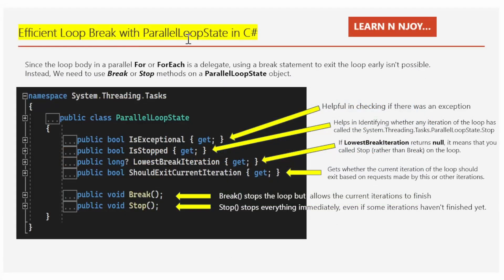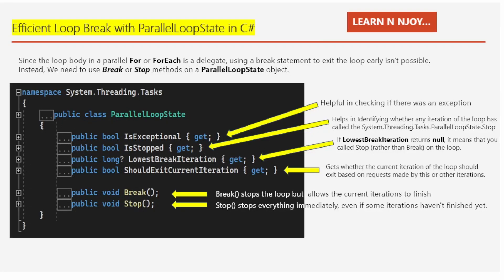Efficient loop break with parallel loop state in C#. When you are doing tasks simultaneously using loops in programming, it's not easy to stop the loop whenever you want using the regular break statement. Instead, you use something called a parallel loop state object to stop the loop. Imagine you are counting apples with your friends — each person counts a few. If one friend finds a rotten apple and wants to stop counting, they need to tell everyone to stop. That's exactly like using parallel loop state to stop a loop in programming.